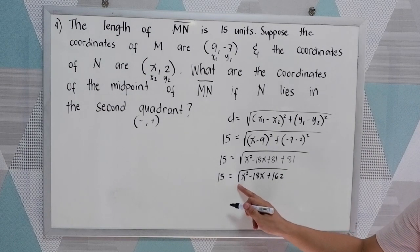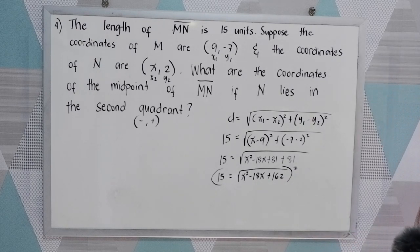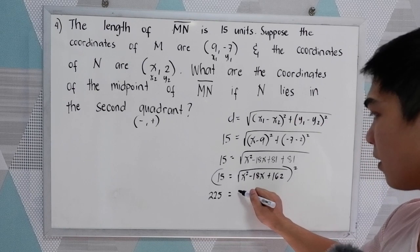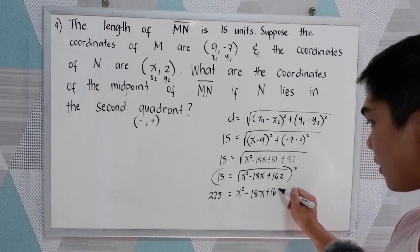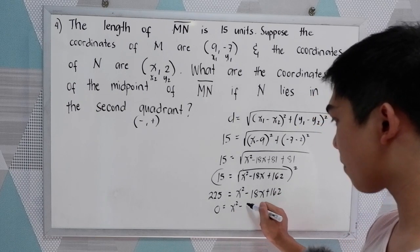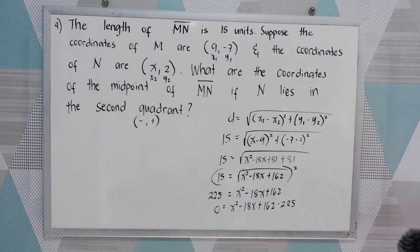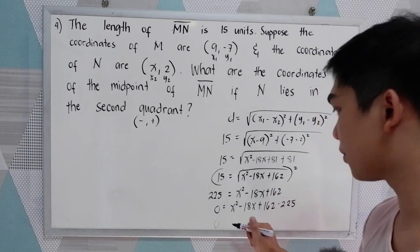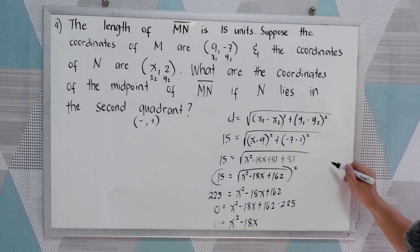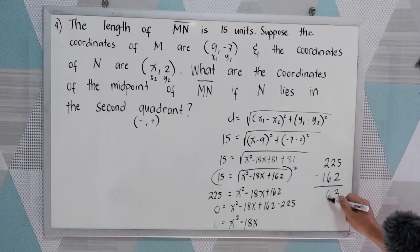We need to remove the square root, so square the equation. 15 squared is 225, equals x squared minus 18x plus 162. The square root and square cancel. Now equate to 0: 0 equals x squared minus 18x plus 162 minus 225. Simplifying, 162 minus 225 gives negative 63. So we have 0 equals x squared minus 18x minus 63.